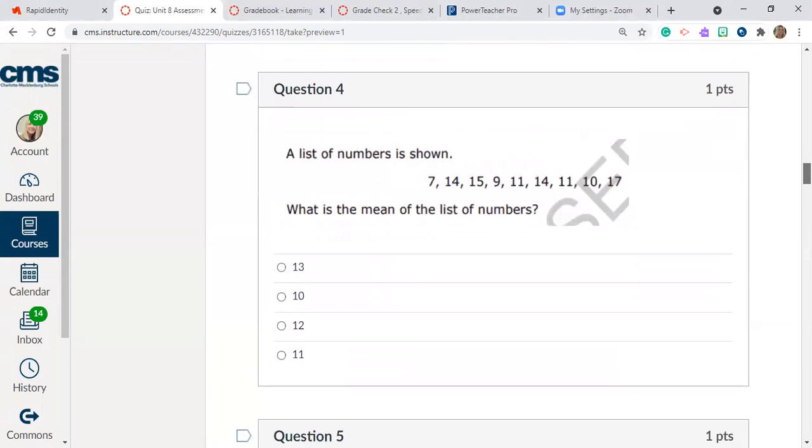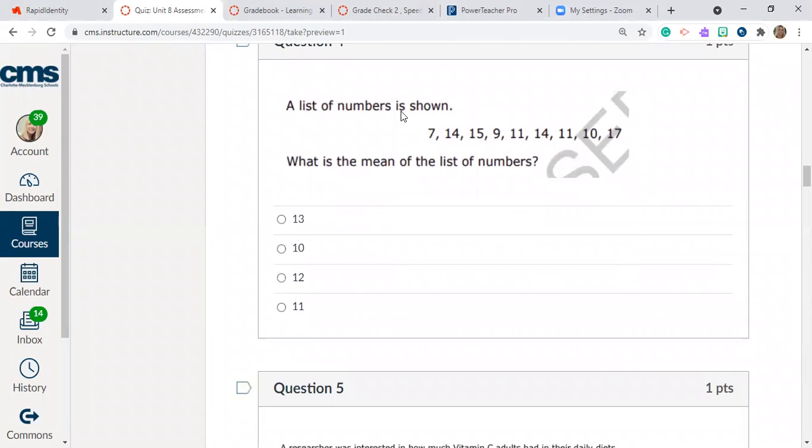Question number four. A list of numbers is shown 7, 14, 15, 9, 11, 14, 11, 10, and 17. What is the mean of the list of numbers? Pause and do the work.